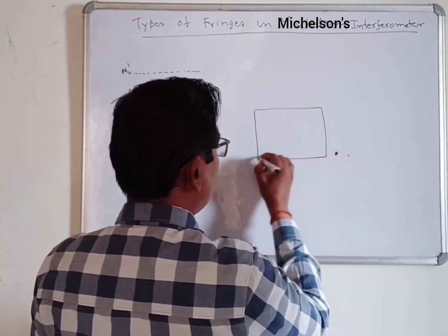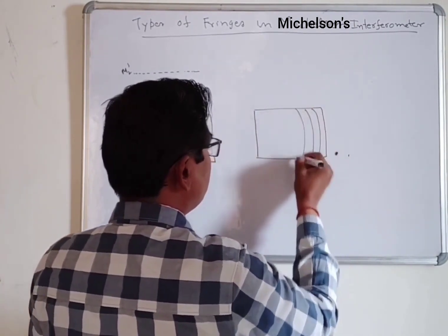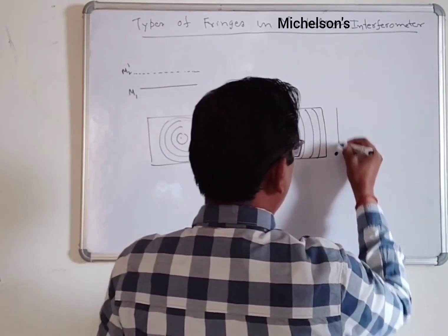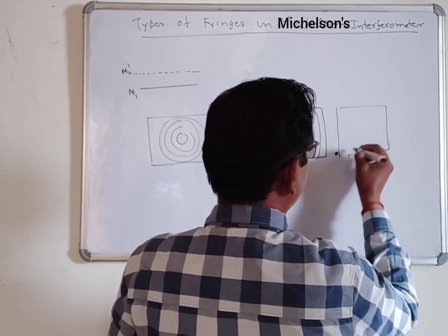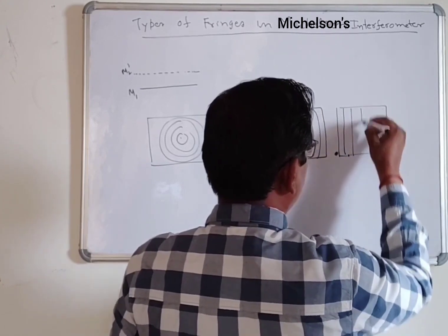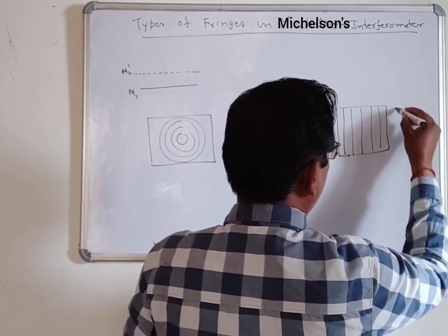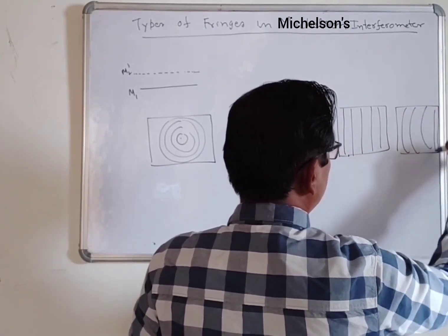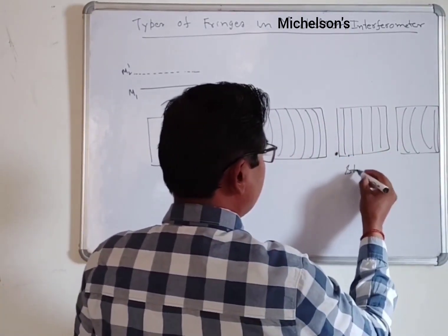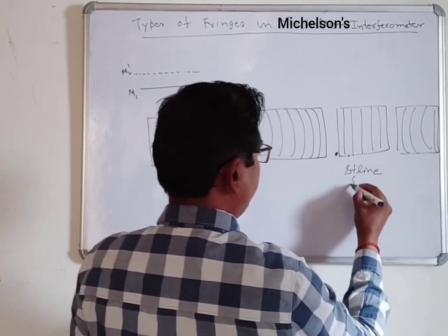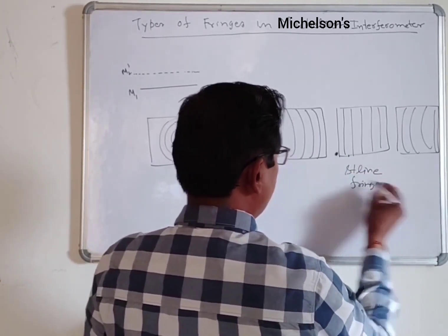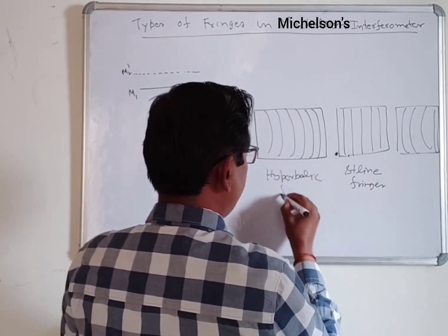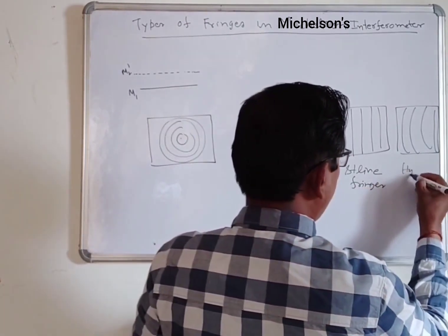You can also generate a curved form like a hyperbola. Additionally, you can generate straight line fringes, hyperbolic fringes, and another set of hyperbolic fringes — so there are four fringe types in total.